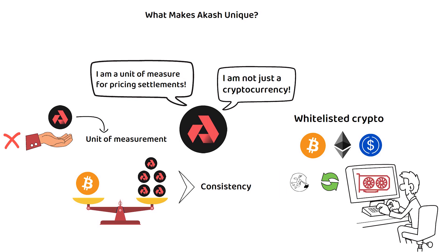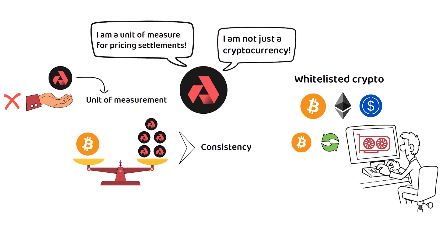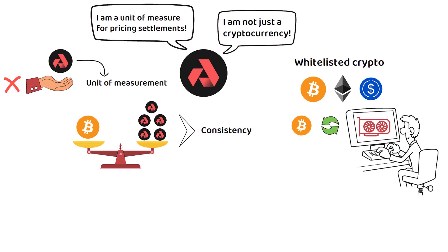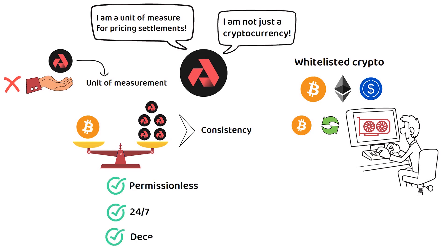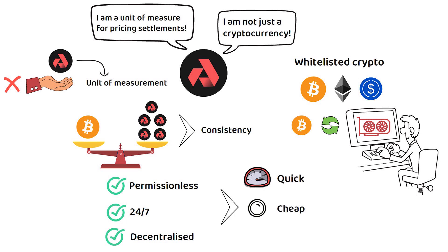In summary, what makes Akash unique from its peers is a mix of all the above. It is a permissionless, 24x7, decentralized cloud computing service that provides quick, cheap, and green GPU power to those who need it.